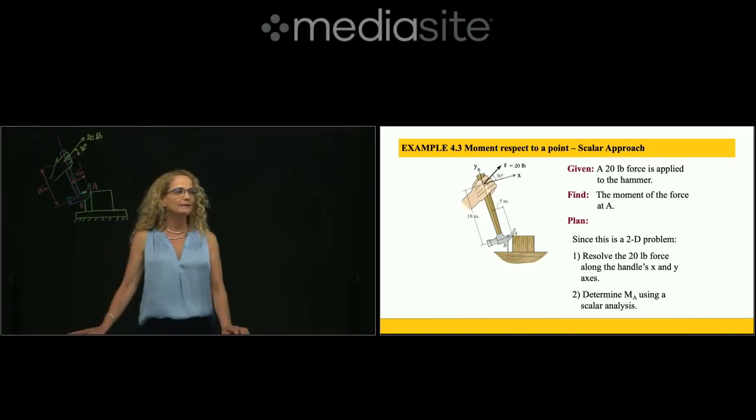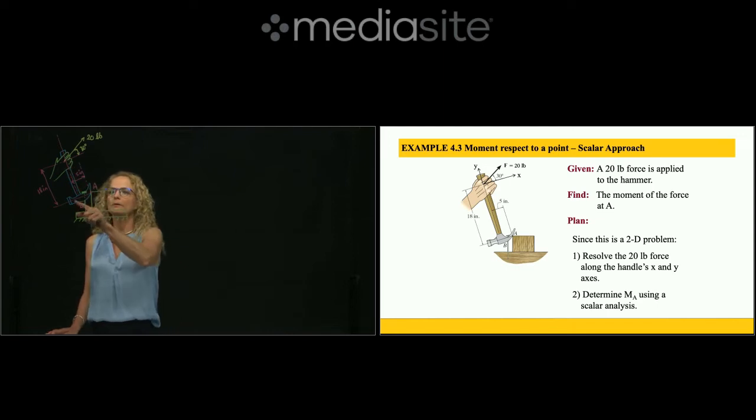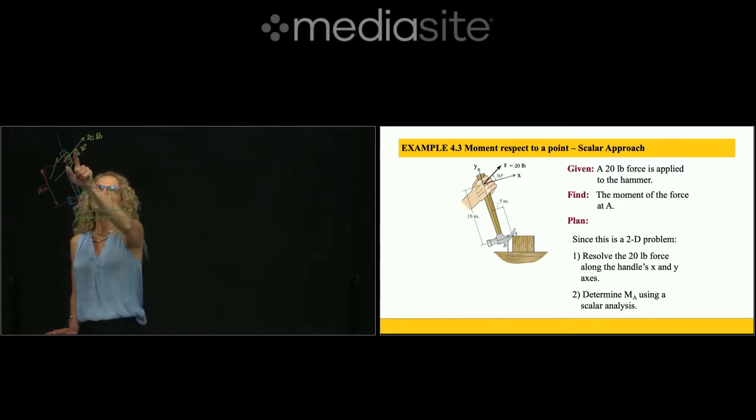Hi, this is problem 4.3. So here we have a hammer, and with this hand which is applying force in this direction, inclined 20 pounds at an angle of 30 degrees perpendicular to the line of the hammer, and they are trying to take this nail out.